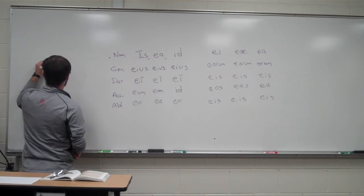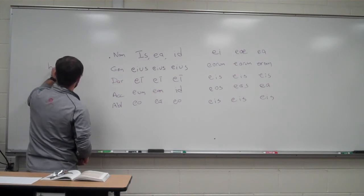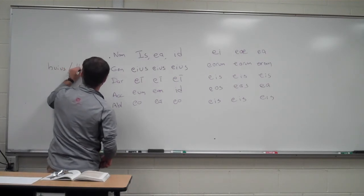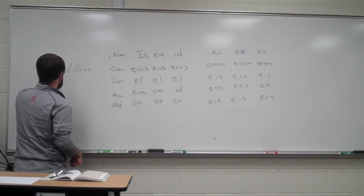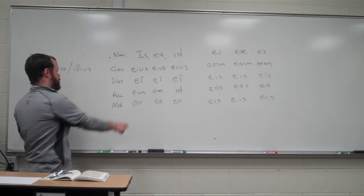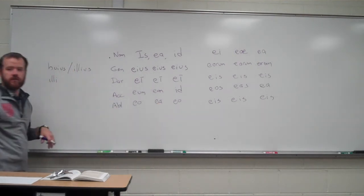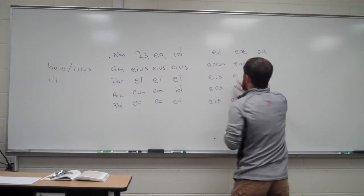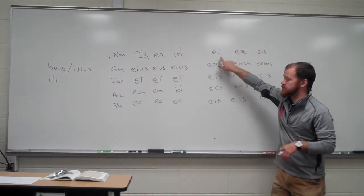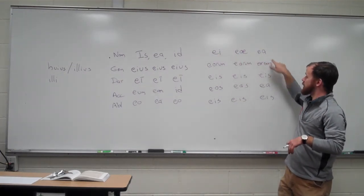And so that's why this chart looks very similar to hic, haec, hoc and ille, illa, illud. So here, eos, we have in huius and illius. Here we have the i being repeated, like from illi. Here, the o, a, o pattern from illo, illa, illo. And the ei, ei, ea, similar to illi, illi, illa.